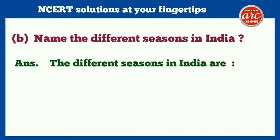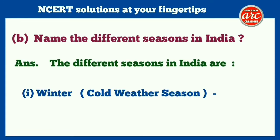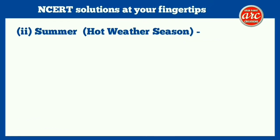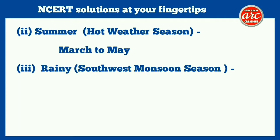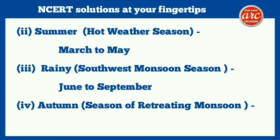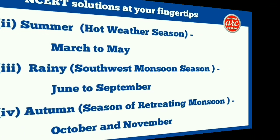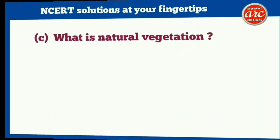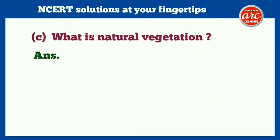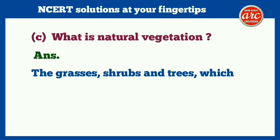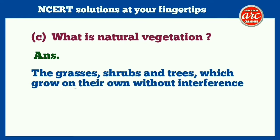(b) Name the different seasons in India. Answer: The different seasons in India are: (1) Winter — cold weather season, December to February; (2) Summer — hot weather season, March to May; (3) Rainy — southwest monsoon season, June to September; (4) Autumn — season of retreating monsoon, October and November. (c) What is natural vegetation? Answer: The grasses, shrubs, and trees which grow on their own without interference or help from human beings are called natural vegetation.